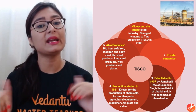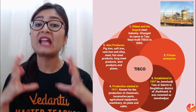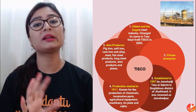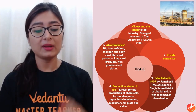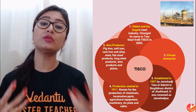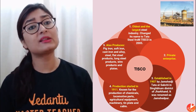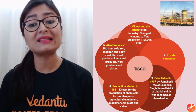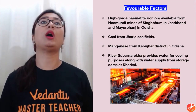Tata Steel is a private company. It was established by Jamshedji Tata in 1907. They produce a wide range of products including chemicals, locomotive parts, tin plates, cable, soft iron, cast iron, alloy steel, flat steel products, long steel products, wire products, and plates. There are so many things that they produce.